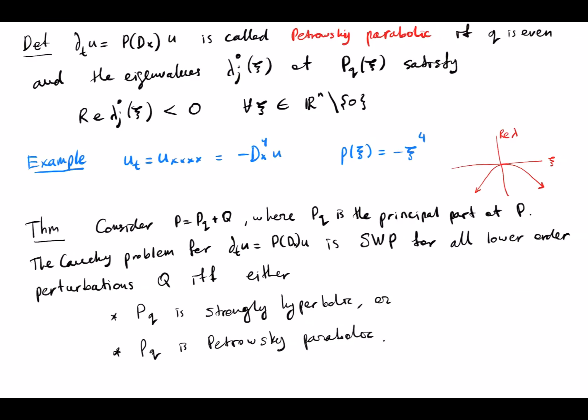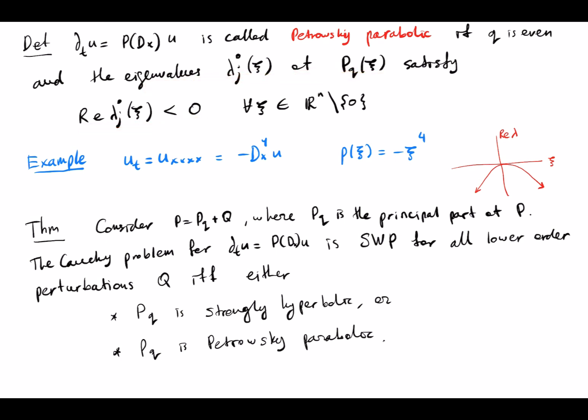The parabolicity condition is called Petrovskiy parabolicity. This problem is called Petrovskiy parabolic if q is even and the eigenvalues of the principal symbol satisfy the condition that their real parts must be strictly negative for all non-zero xi. The principal symbol is a homogeneous polynomial, so this simply means the real part of the eigenvalues is strictly negative on the unit sphere. Obviously the heat equation satisfies this condition.